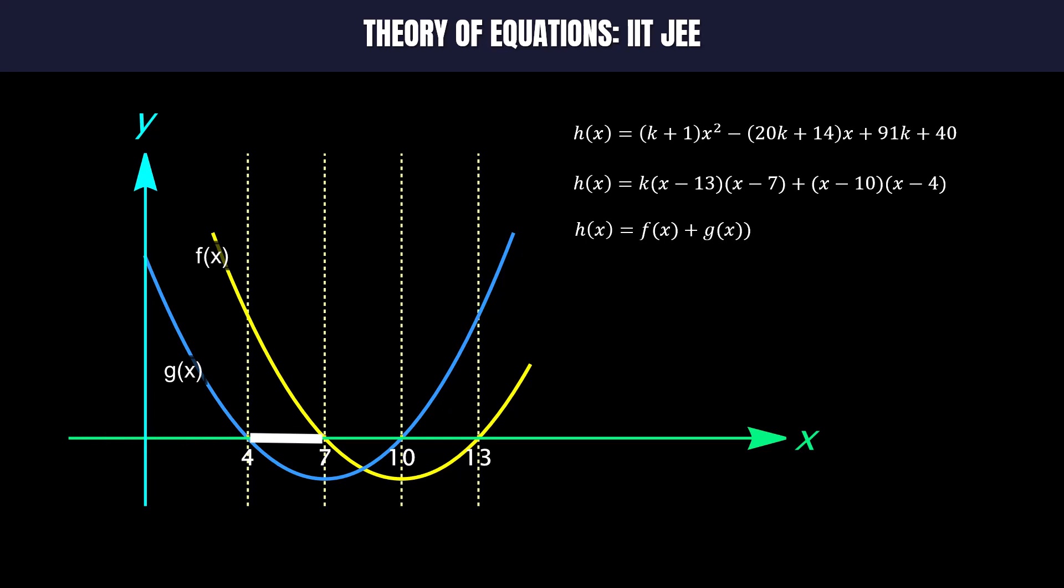Second, when x lies between 4 and 7. In this interval the value of h(x) may be 0 because f(x) is positive and g(x) is negative. Hence h(x) will have a root in this interval.